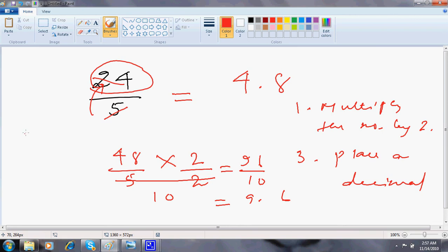Now you can tell me anything like, let me say, 4 by 5. It's obvious. 4 into 2 is 8. Place a decimal.